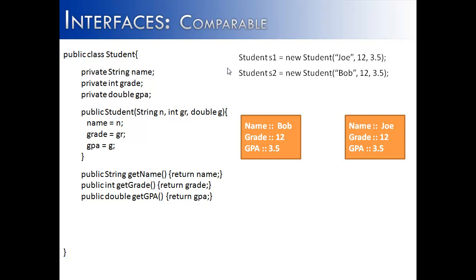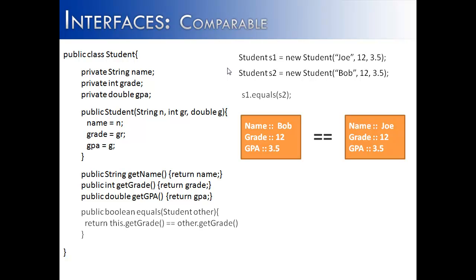In order to compare these two objects, we have a useful method from the Object class called equals. We can write it down here to make a comparison — I've chosen to use the instance variable grade. So these two would be equal on grade level.